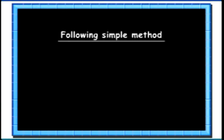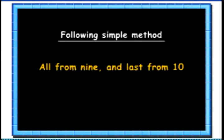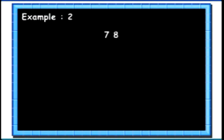In order to calculate complement of a number, we can use the following simple method known as 'all from 9 and last from 10'. For instance, here we have a number 78. To find its complement to the base 100, we have to find the difference between 100 and this number. In the number 78, if we subtract all digits from 9 and last from 10, we will get the complement.